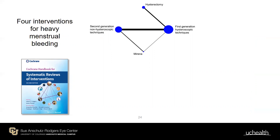In the network graph, solid lines show RCT comparisons between pairs of interventions; line thickness is proportional to the number of trials; node size reflects participants randomized to that intervention. This reveals gaps — for instance, hysterectomy has never been directly compared to Mirena or to second generation techniques. Decision makers want to know comparative effectiveness across all four interventions simultaneously and how to rank them from best to worst.